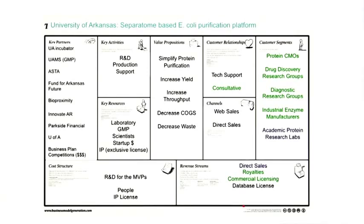Just as a note, some of the most complex multi-sided markets are actually in the medical device business, where you have users, payers, hospitals, insurance companies, regulators, and so on — and each one needs a value proposition. You need to understand the revenue model for each. Some business model canvases can be quite complex.